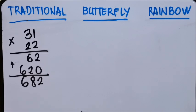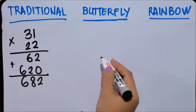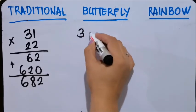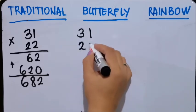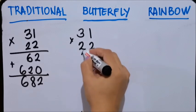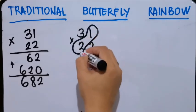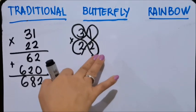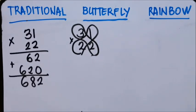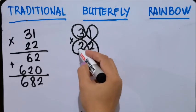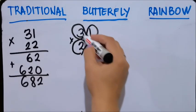And then you add, so the answer is 682. This is the traditional way. I will teach you the butterfly technique. Butterfly technique is also 31 times 22. Let's draw a butterfly like this. Does it look like a butterfly?